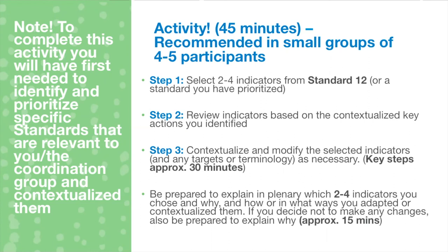The first step once in your smaller groups is to spend about 30 minutes going through the three steps just explained. Select two to four indicators from your priority standards — here I have suggested standard 12, but it will depend on which standards you have prioritized in your context. Then review those indicators based on the standards and key actions you have identified, and lastly contextualize and modify the indicators and any targets or terminology accordingly.